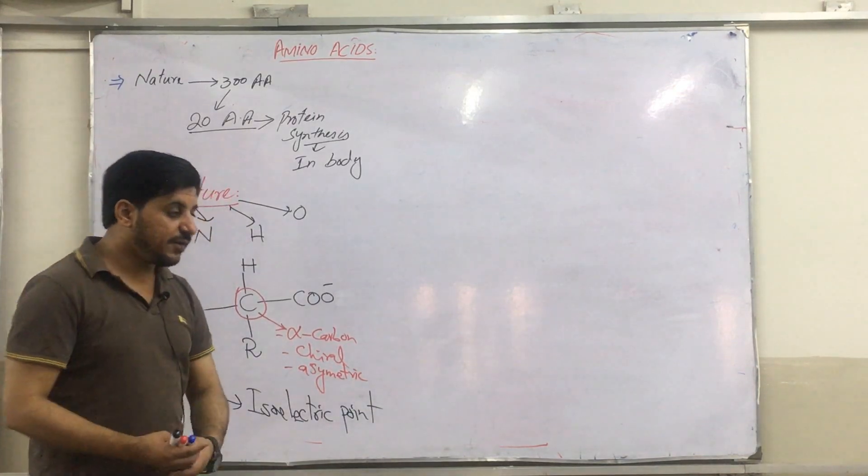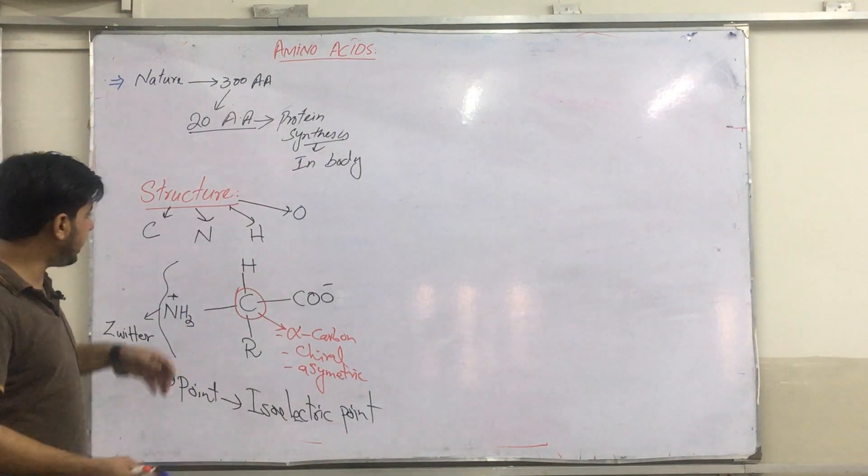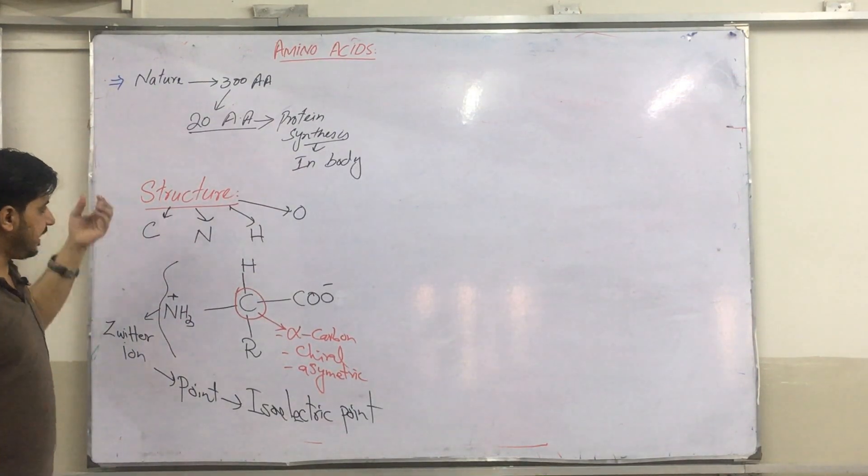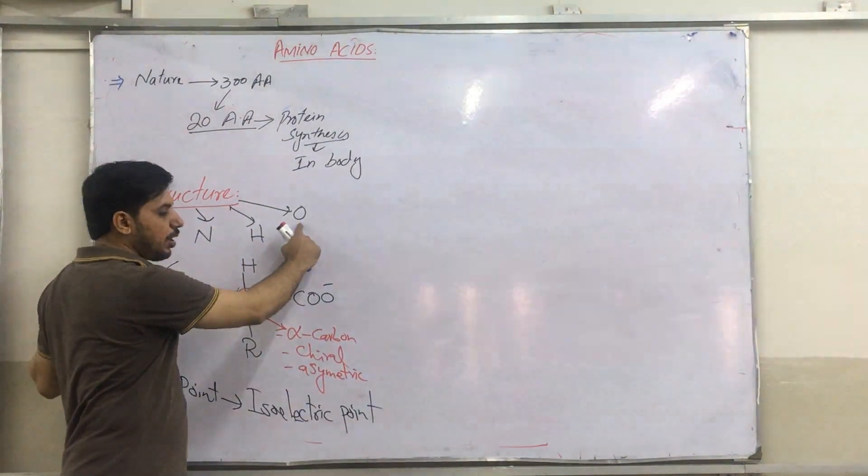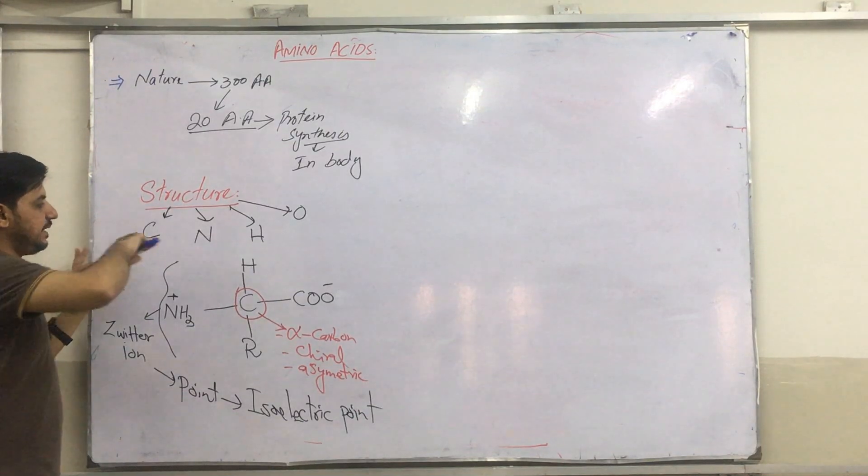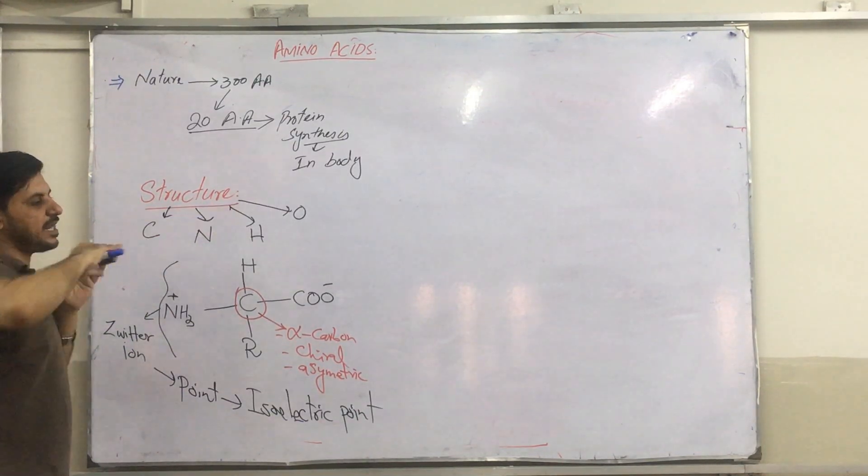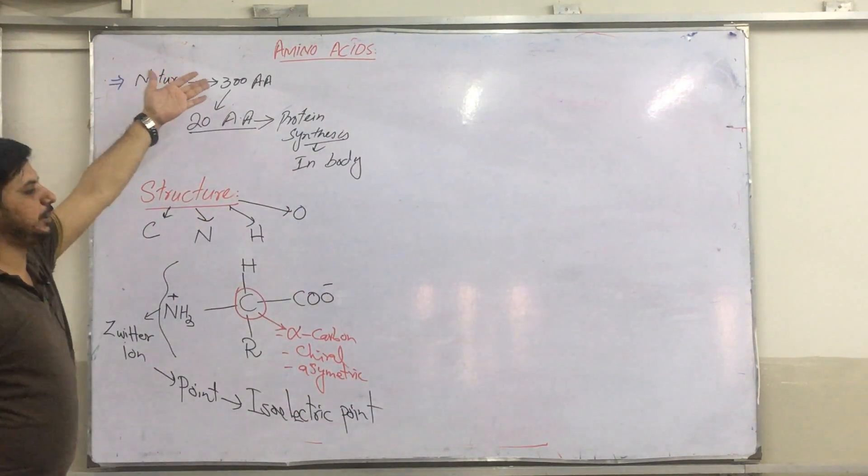So, this is the general structure of the amino acid. Once again, I am going to repeat. Listen very carefully: structurally and chemically, it is composed of four elements: carbon, nitrogen, hydrogen, and oxygen. These are present in carbohydrates, but if there is nitrogen, then it is a nitrogenous compound, and it is called amino acids.